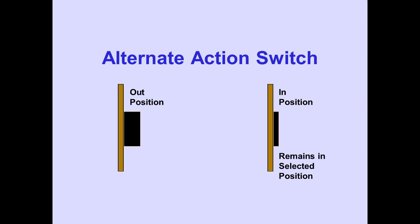Alternate action switches have two positions, out or in. When pushed in, the switch is on and remains in the selected position. System operation may be delayed until system logic has been established.